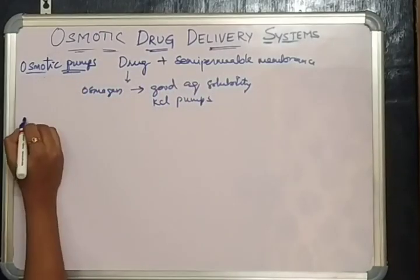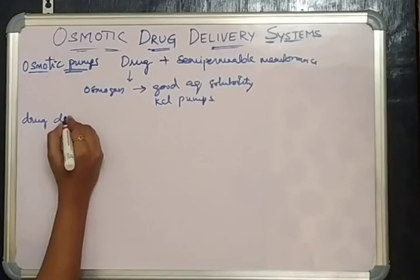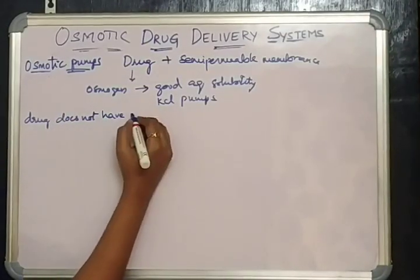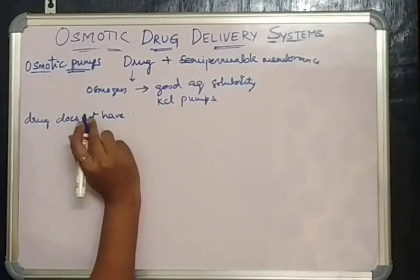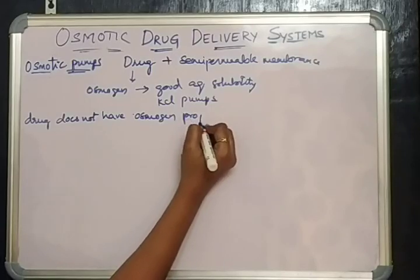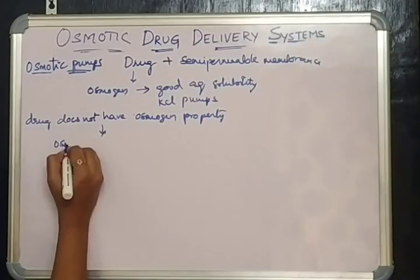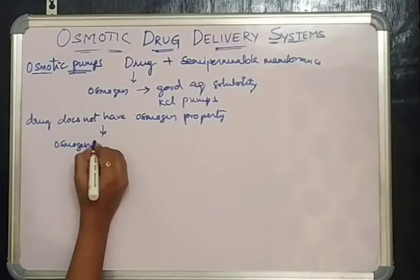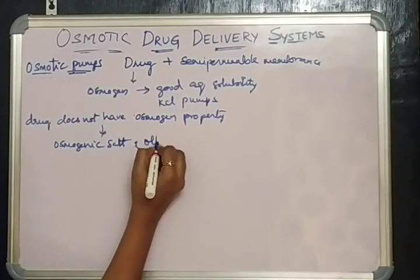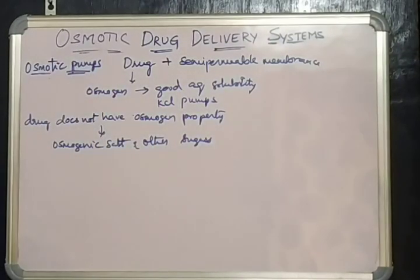In cases where the drug does not have osmogenic property, we have to use osmogenic salts and other sugars in the manufacturing of these osmotic pumps. An example of a drug acting as its own osmogen is potassium chloride pumps.